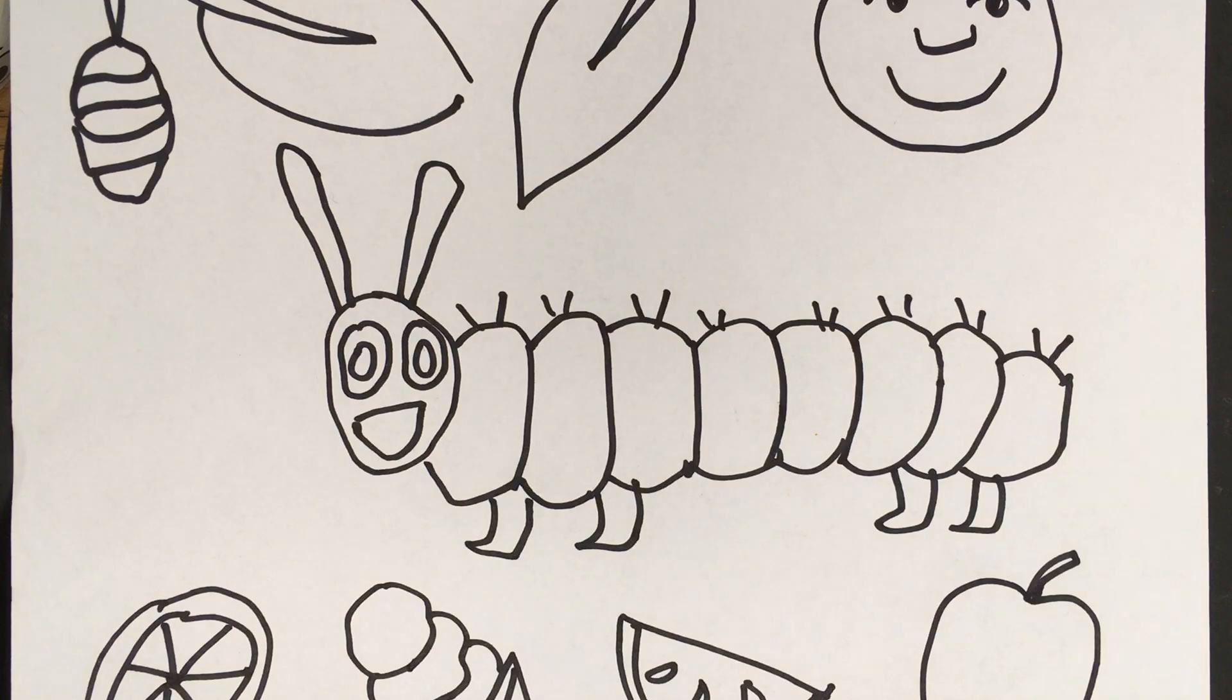We're going to be making a Hungry Caterpillar today with very simple instructions for young children 3, 4, 5 years old. We're going to do it step by step. I hope you enjoy the video. If you do, don't forget to subscribe.